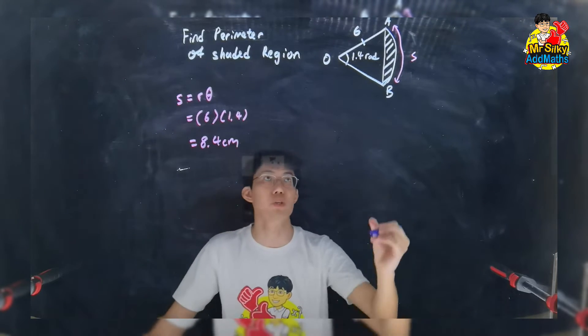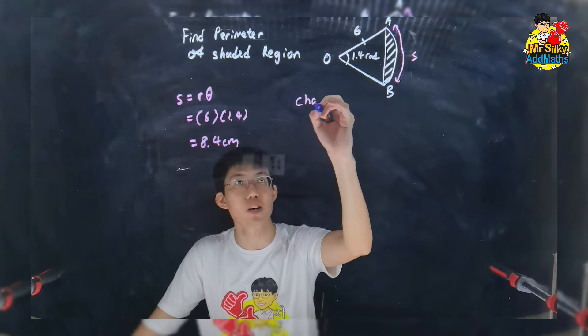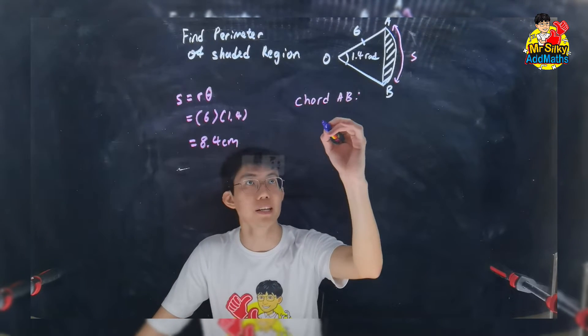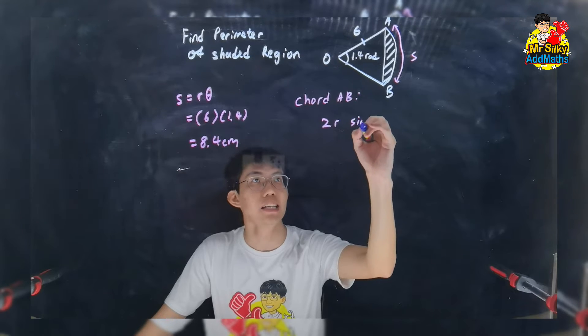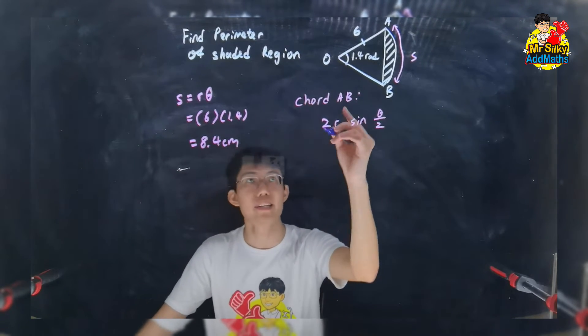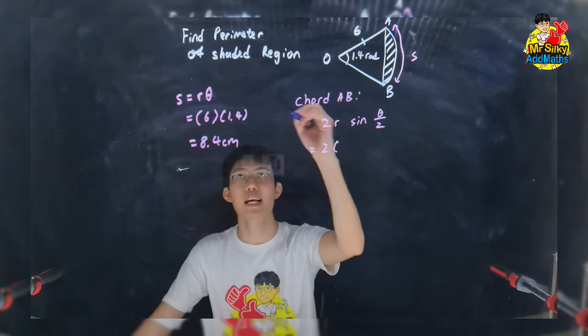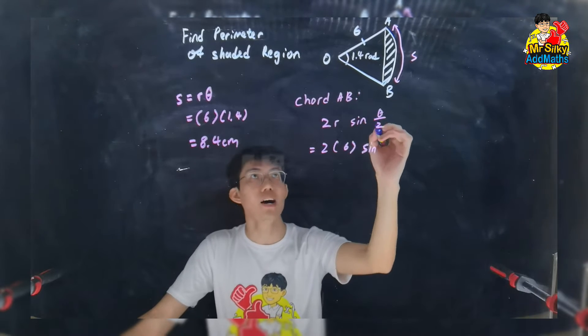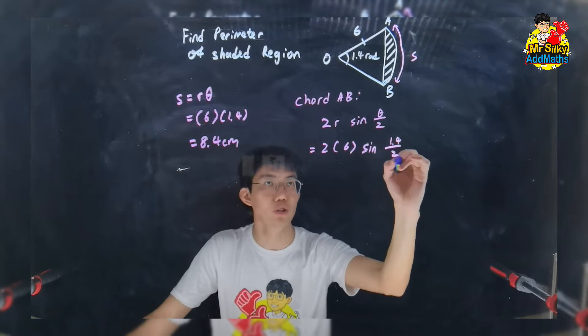If you look back to my previous video, I'm going to find out what is the chord AB. And I had mentioned before, the formula is 2r sin theta over 2. In order to find the chord, I have to apply the formula. The r is 6 cm, sin theta over 2, which is 1.4 over 2.